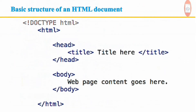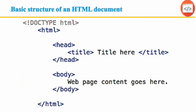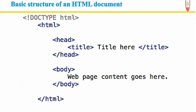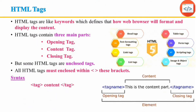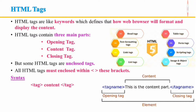Basic structure of an HTML document: the HTML tag indicates that the web page is written in HTML. The title tag contains the web page title. The head tag contains information about the web page. The body tag contains the content of the web page, and the closing HTML tag marks the end of the web page. HTML tags are like keywords that define how a web browser will format and display the content. The HTML tags contain three main parts: opening tag, content tag, and closing tag. Some HTML tags are unclosed tags.